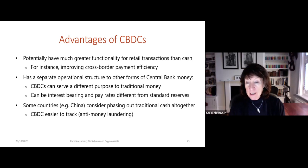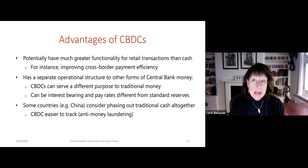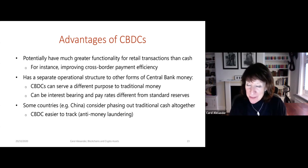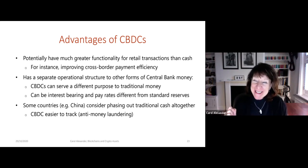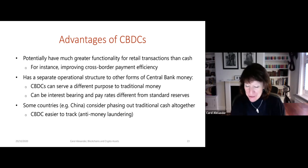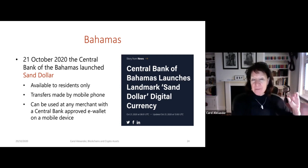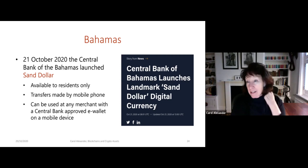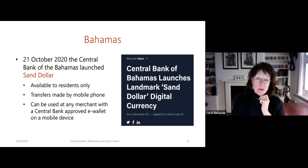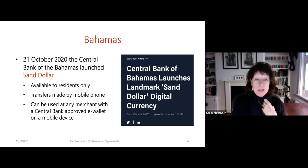Some countries, for example China, are actually thinking of getting rid of traditional cash altogether and replacing it completely with a digital yuan. The motivation is that CBDCs are much easier to track — there's a lot of news about money laundering done with traditional cash. The Bahamas just this week issued the very first CBDC called the Sand Dollar, available only to residents. Transfers are made just with a mobile phone app, and it can be used at any merchant with a central bank approved e-wallet on a mobile device.